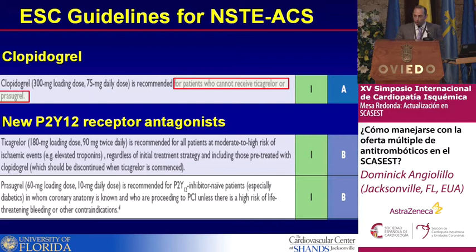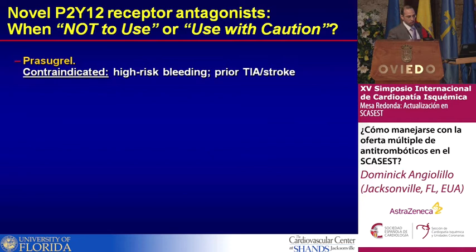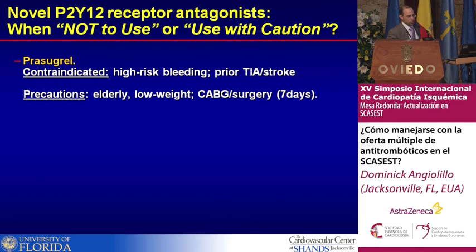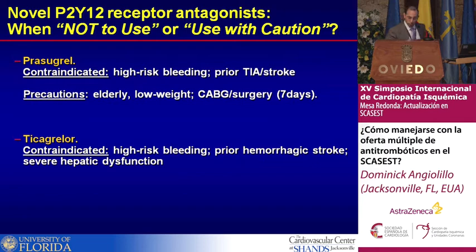As we move forward introducing these new agents, we need to understand who are the patients where we cannot use prasugrel or ticagrelor. Contraindications for prasugrel include patients at high risk of bleeding and patients with prior stroke. Precautions include the elderly, low body weight, and patients undergoing surgery who need to wait seven days. With ticagrelor, high risk of bleeding is also a contraindication, as is prior hemorrhagic stroke. You can consider ticagrelor in patients with prior ischemic cerebrovascular events but not hemorrhagic stroke.